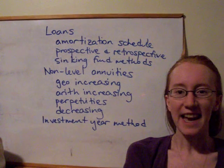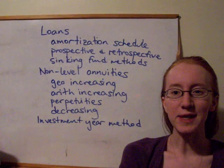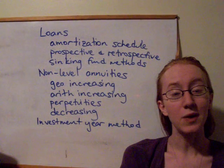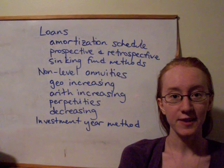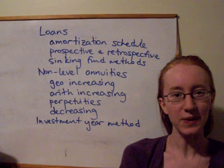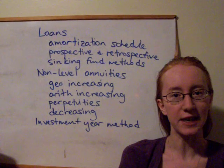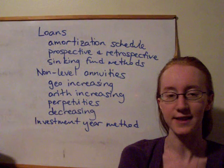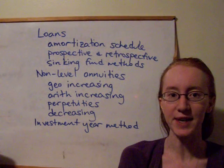Then there was reading week, and then in Week 7 we started looking at annuities where the payments are no longer level. So we get into a whole different situation when the payments of the annuities are not the same every period.